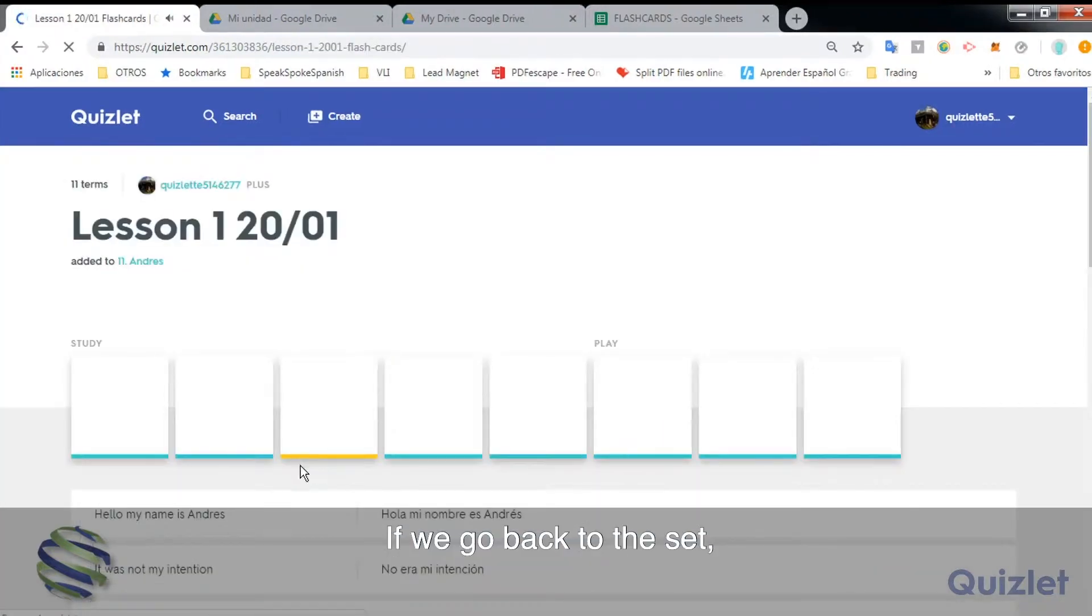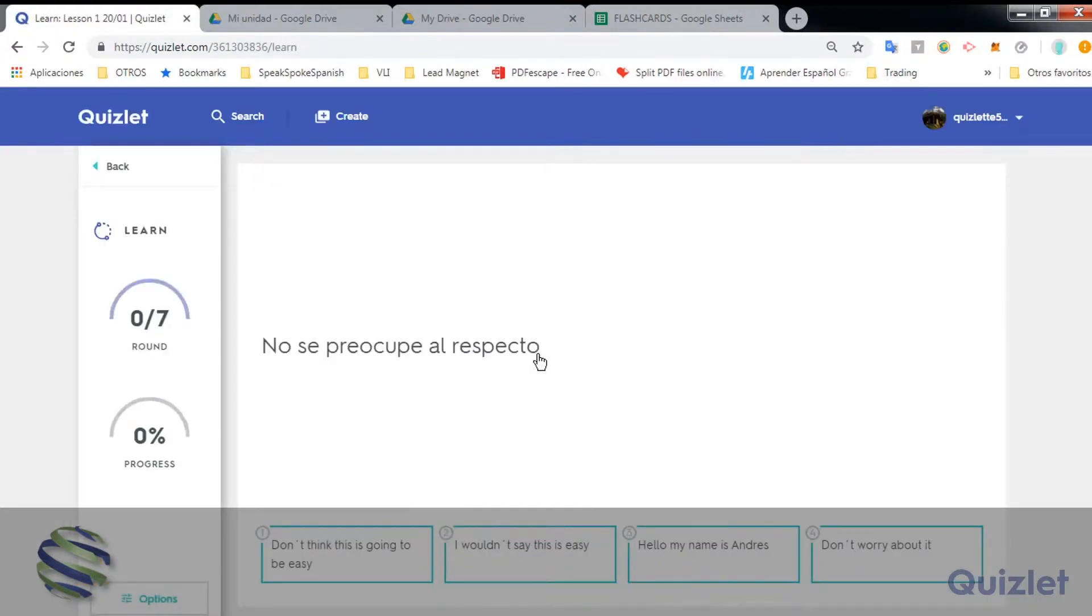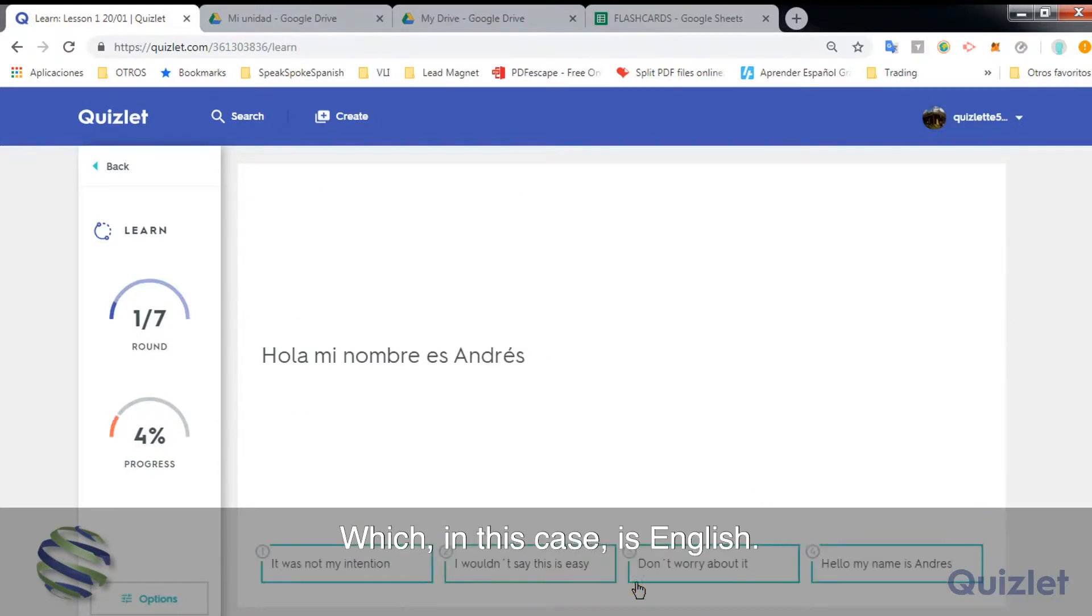If we go back to the set we will find other options to learn and study. Here we can read the sentence in our native language and guess the meaning in the target language which in this case is English.